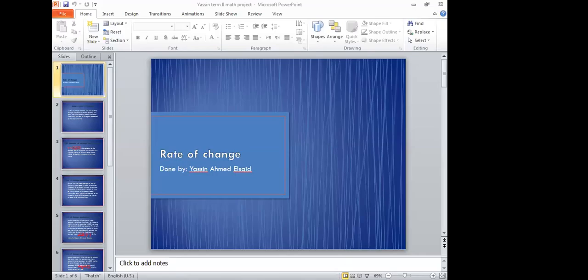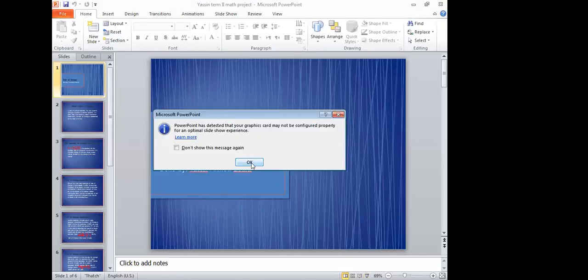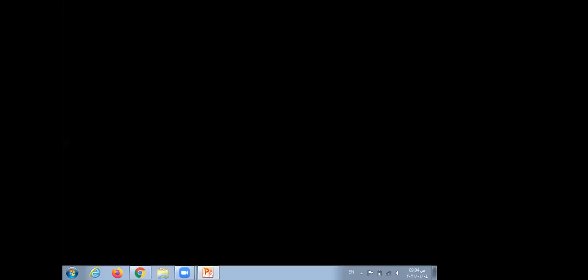Rate of change. It describes how one quantity changes in relation to another quantity. It's used when speaking about momentum or speed most of the time, and is represented graphically by the slope.